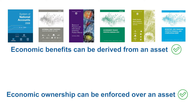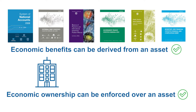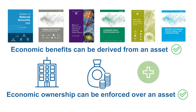Different kinds of economic benefits can be derived from an asset. For example, the ability to use the asset in production, such as buildings or machinery, the generation of property income in the form of interest or dividends, or the potential to sell the asset and thus realize holding gains.